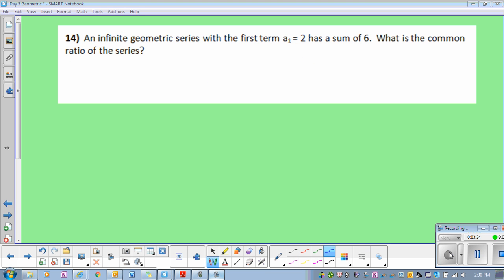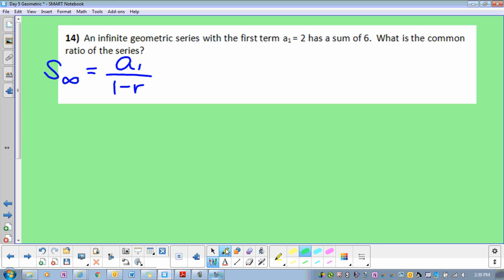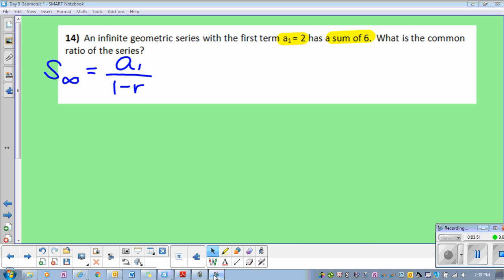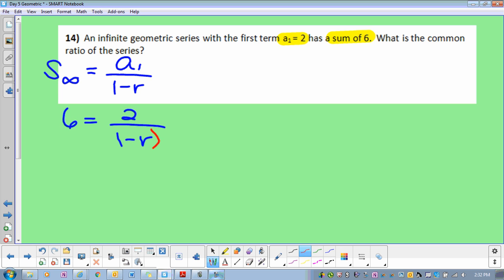It's like they give you the answer and they want you to find those parts. In this case, r. Try this part. Remember, we're still using the infinite geometric series formula. Looks just like number 13. Think about what you know. Try to find r. I see that both of you guys are working. Sum of 6, a sub 1 is 2, 1 minus r. Remember I said 1 minus r. Since you have more than one term, you can put parentheses around it.